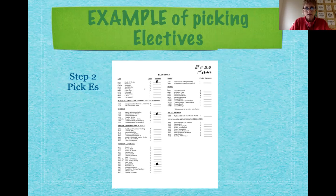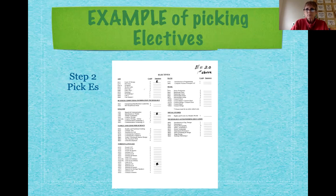It should add up to eight credits. So the student chose Fundamentals of Design, a credit of Intro to Theater, and one full credit of Spanish 1. That equals two, and those are the first choices. If that student gets all those courses on the front and the back, they will have a full schedule.